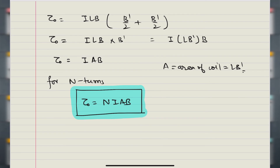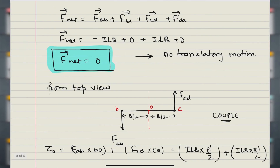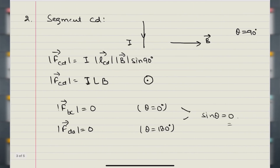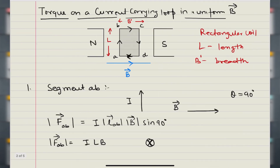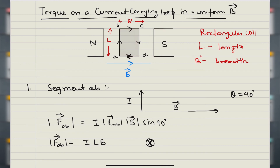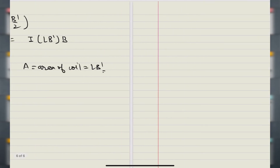This was the special case — because here the plane of the magnet and the plane of the coil are perpendicular to each other. Now suppose I tilt the coil slightly by an angle theta.